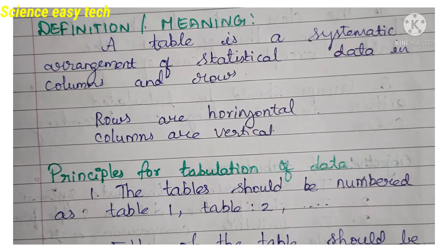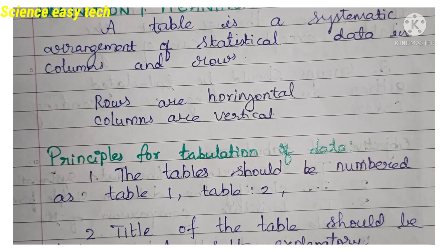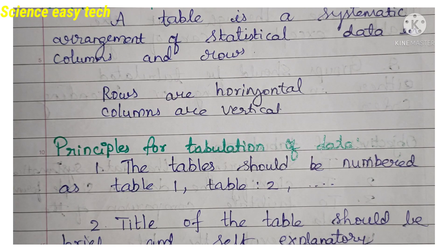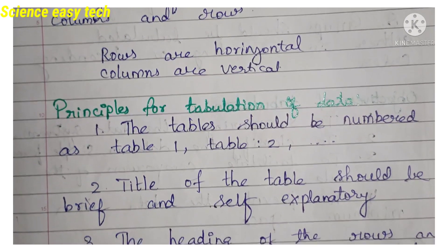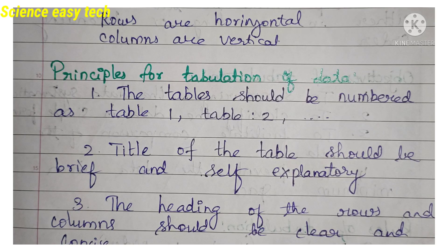Let's move on to the principles of tabulation of data. First, the table should be numbered — Table 1, Table 2, Table 3, Table 4, and so on, depending on the number of tables you are going to construct. Second, the title of the table should be brief and self-explanatory — it should not be too large.